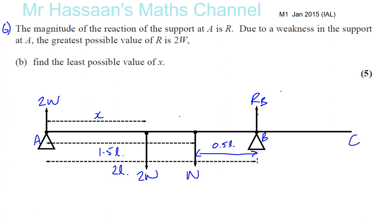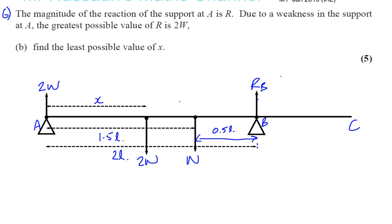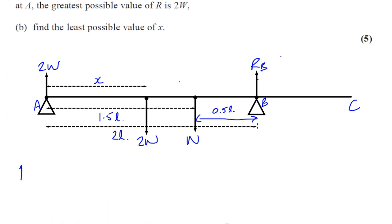So, if we now, in this new situation, if we now resolve forces vertically, resolving forces vertically, we know that RB plus 2W equals 3W. So, therefore, RB must be equal to W. We know that now. Okay. So, this is equal to W because the forces have to balance out.